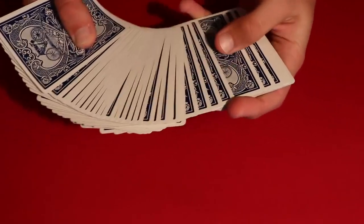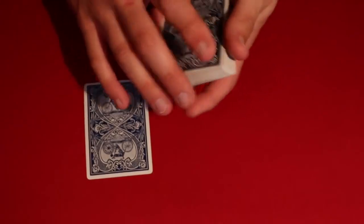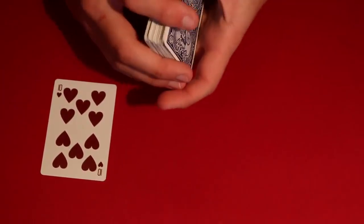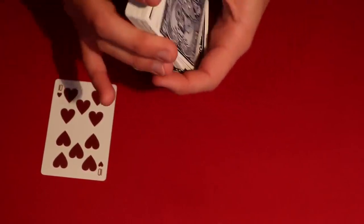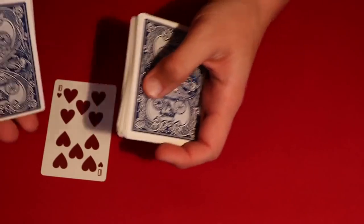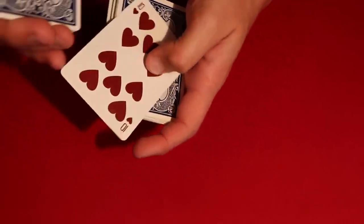So you go ahead and you have the spectator pick any card that they want to. Let's say in this case it's a ten of hearts, right? So you go ahead and what you do is tell your spectator to tell you when to stop, and all you're doing is a regular overhand shuffle. And the moment they tell you to stop, I'll leave the card right here.